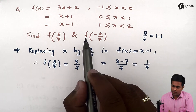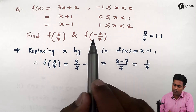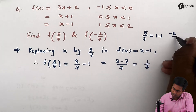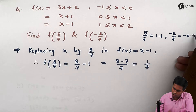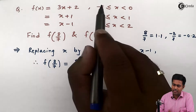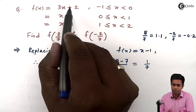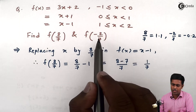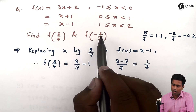Now to find the value for the point minus 2 upon 7, we first check where this point lies. Minus 2 upon 7 is equal to minus 0.2, and minus 0.2 lies in the range minus 1 to 0, for which f of x is 3x plus 2. So to find the value of f of minus 2 by 7, we are going to use the first f of x since this point lies in the first range.